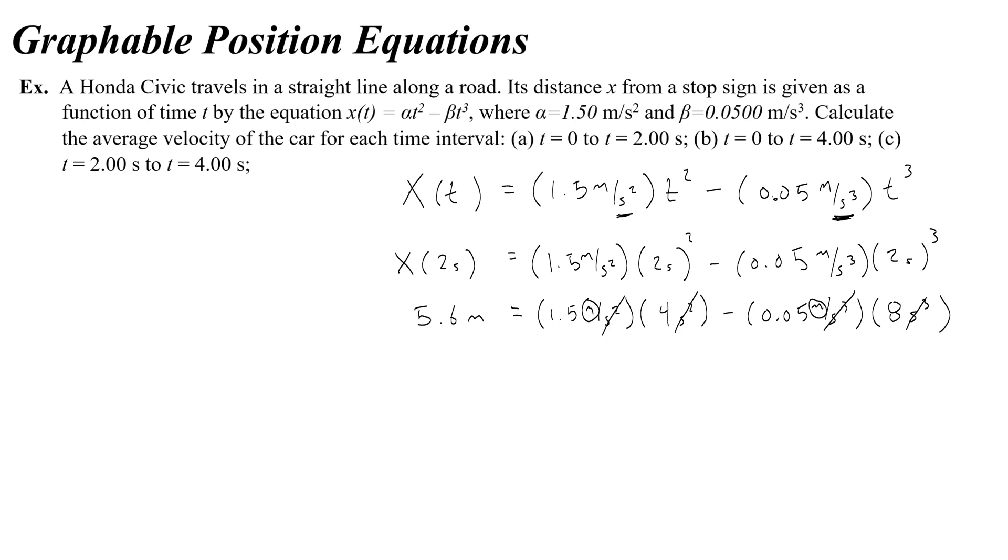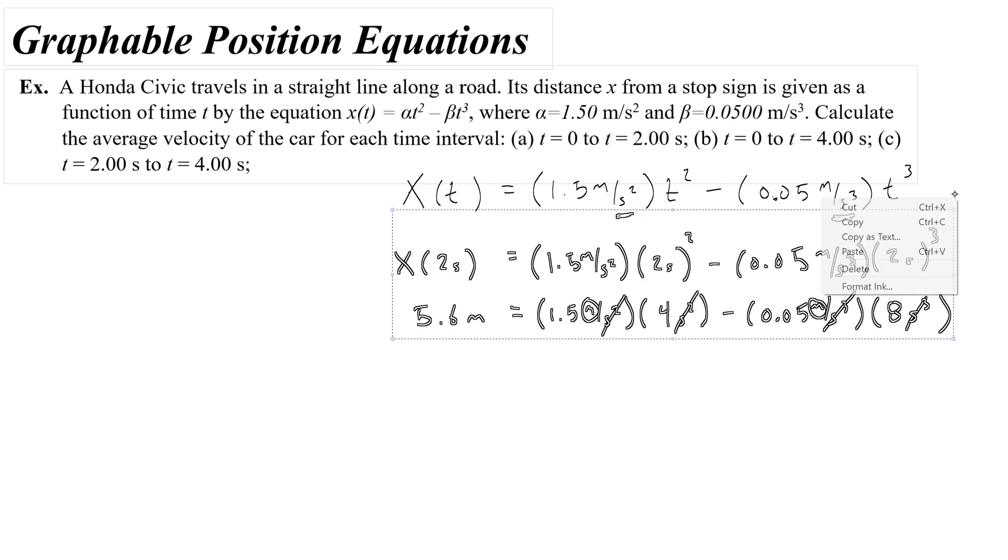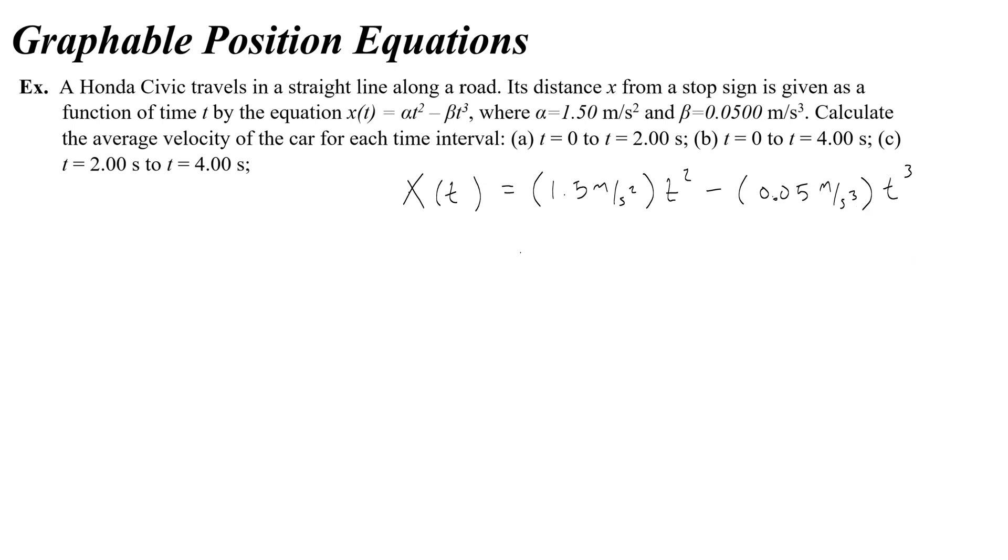And to kind of store this and make it math friendly, let me go ahead and just start over. Now that you've seen how the units work out and they agree, let me write this a bit more math friendly. If I was given a problem like this on the AP test I would probably just write x equals 1.5 t squared minus 0.05 t cubed. This is a much more math friendly equation to me. I can understand how to graph it and how to do algebra with it. I'm just sort of getting rid of the units.